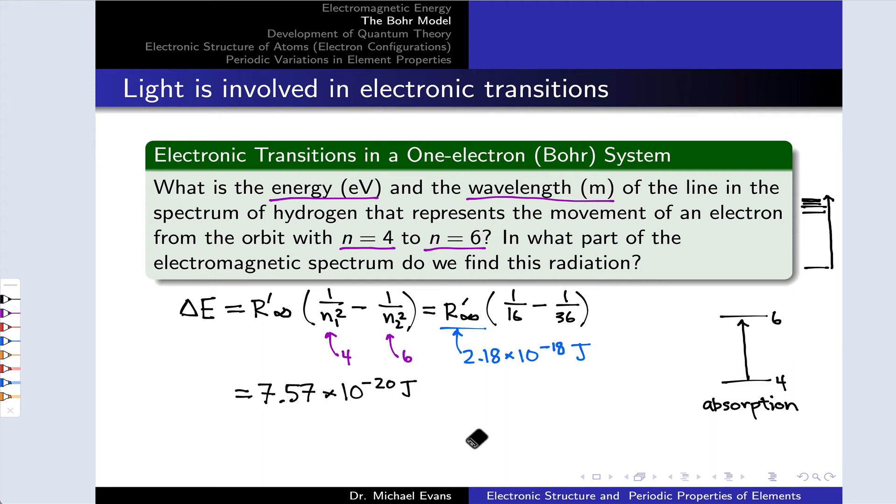Plug in these numbers, multiply it all out, and we get a very small number of joules: 7.57 times 10 to the negative 20 joules. We can use a conversion factor to convert this to more human-friendly energy units of electron volts, and this turns out to be about 0.48 electron volts.